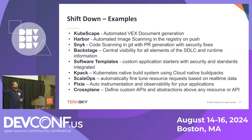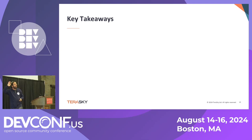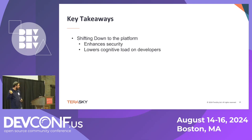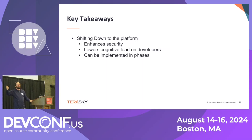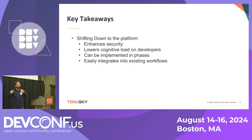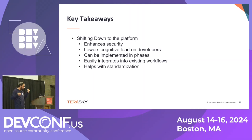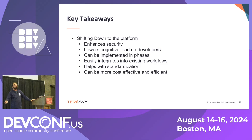So looking at the key takeaways: shifting down to the platform enhances security and lowers the cognitive load on developers by having the platform deal with these things. It can be implemented in phases — any of these tools can be implemented on its own, so it's easy to start with one tool and immediately gain that benefit. Because they're all separate tools, they integrate well into existing workflows and it's not a complete tear-and-replace. It also helps with standardization — when moved to automation, we get standardization instead of developers running random things differently. And it can be much more cost-effective since developers actually focus on writing code, which brings the company money.